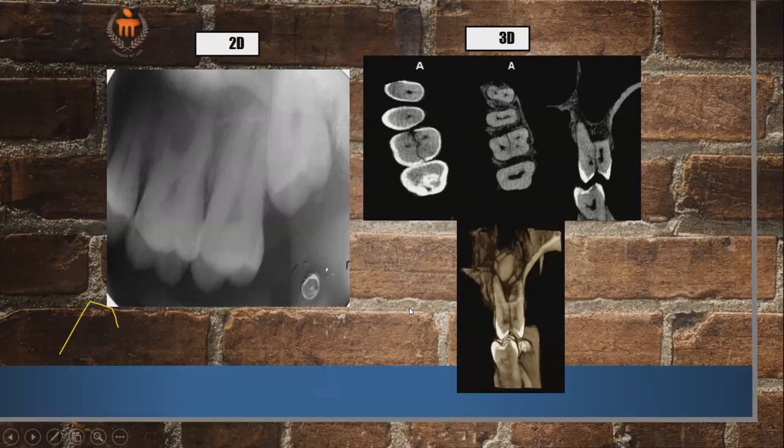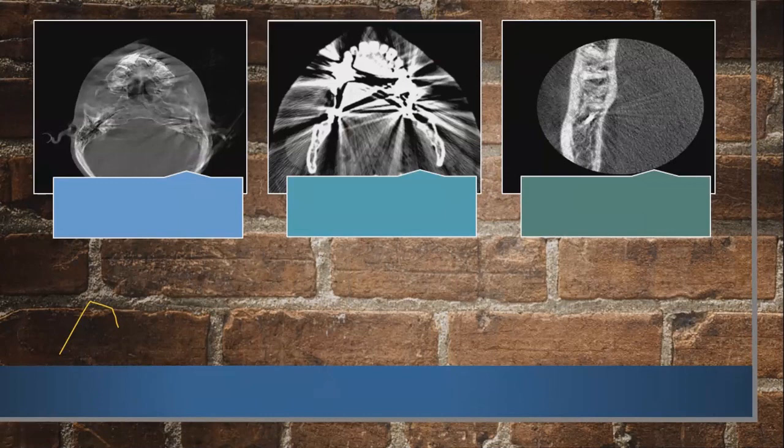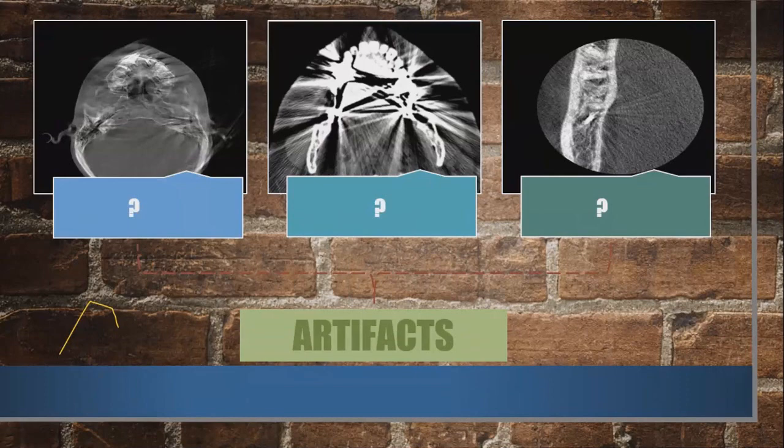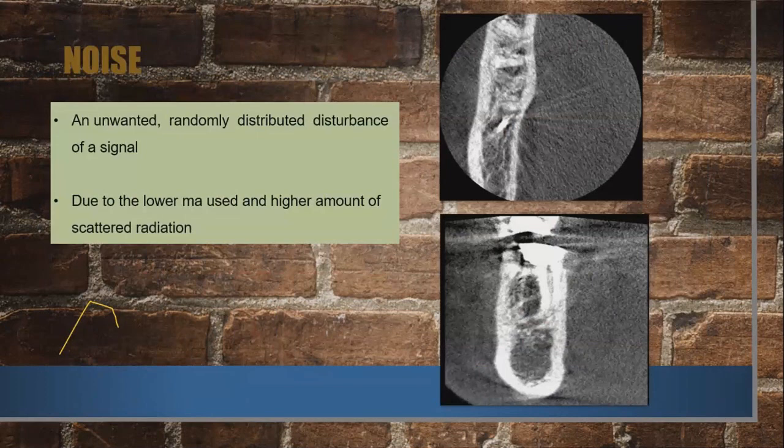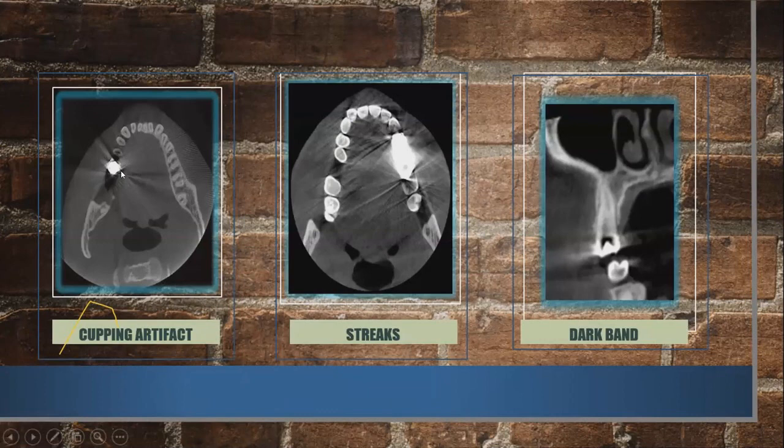On the topic of artifacts: there is graininess in CBCT caused by image noise — keeping the machine calibrated helps minimize this. There are also beam hardening artifacts caused by increased backscatter.